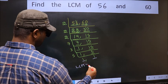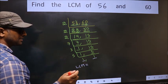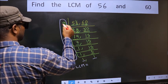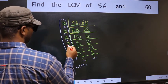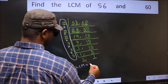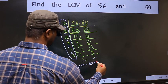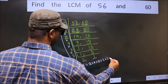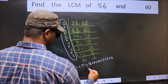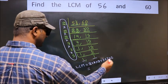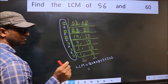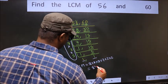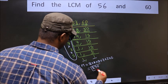Our LCM is the product of these numbers. That is 2 into 2 into 2 into 2 into 7 into 3 into 5. When we multiply these numbers, we get 840. 840 is our LCM.